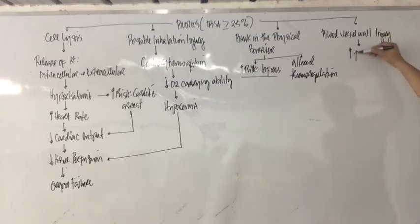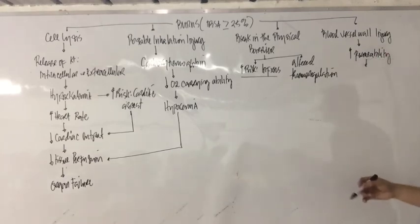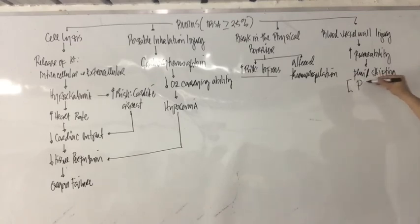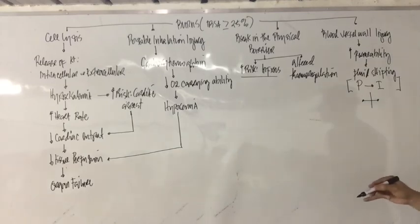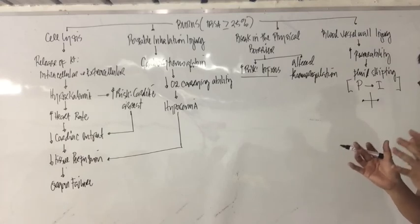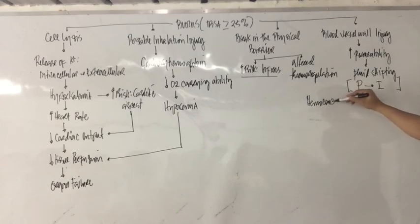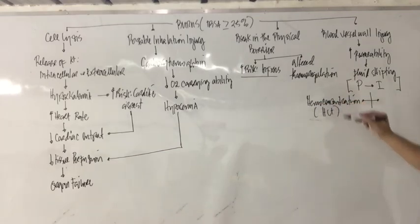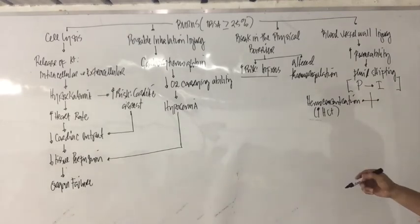Blood vessel injury will increase its permeability, promoting fluid shifting. The movement of fluid is plasma to interstitial. When fluid is removed from the blood, the blood becomes concentrated — this is called hemoconcentration, confirmed by an increased hematocrit. So what is the fluid that moves out? It takes sodium with it.